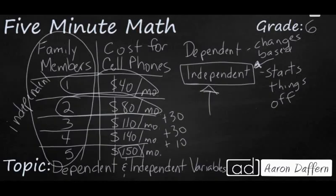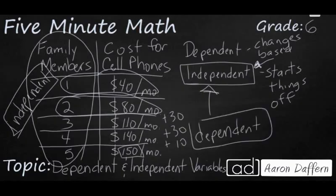You can't change how many people are in your family. You can't change how many people need to have coverage. So that stands alone. The cost then is going to be our dependent variable because that changes based on how many people we need. If we need cell coverage for one person, well, the dependent variable is going to be 40. It's only going to cost $40. But if we need cell coverage for four people, well, now it's going to cost $140 a month. So our independent variable is where things get started. Family members, the dependent variable is always changing based on our independent variable.